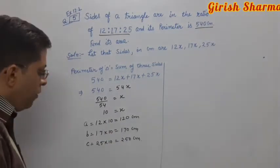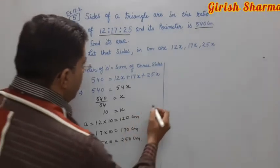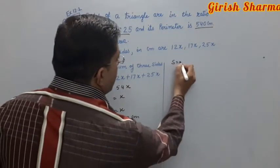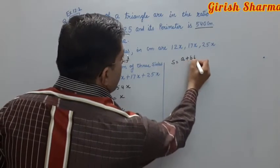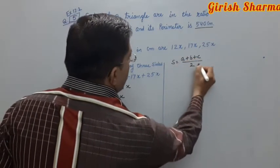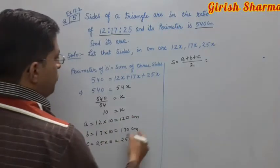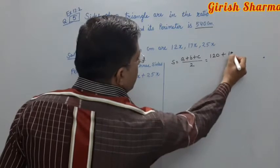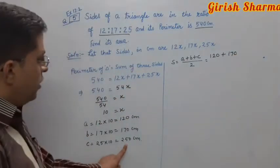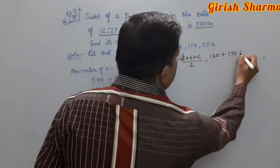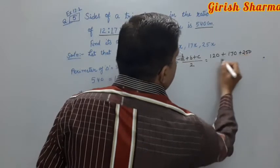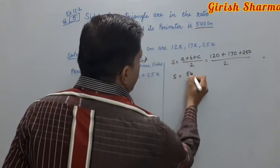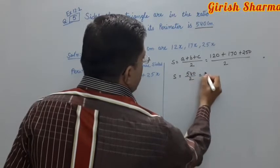Now use Heron's formula. First find the semi-perimeter: s equals a plus b plus c upon 2, that is 120 plus 170 plus 250 upon 2, which equals 540 upon 2.